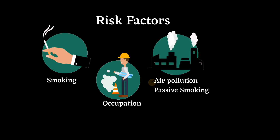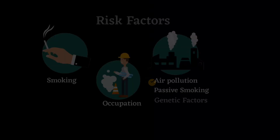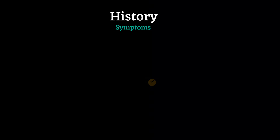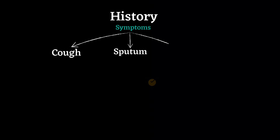Genetic factors include alpha-1 antitrypsin deficiency. COPD should be suspected in any smoker over the age of 40 years who presents with symptoms of chronic bronchitis and/or dyspnea. The three most common symptoms of COPD are cough, sputum production, and exertional dyspnea. Cough and associated sputum production are usually the first symptoms, often referred to as a smoker's cough, which is typically the initial symptom of COPD.